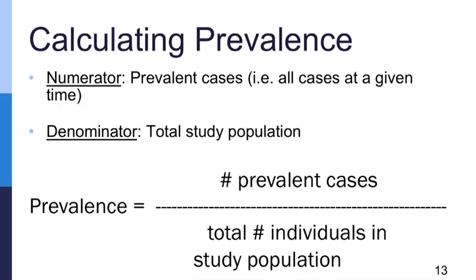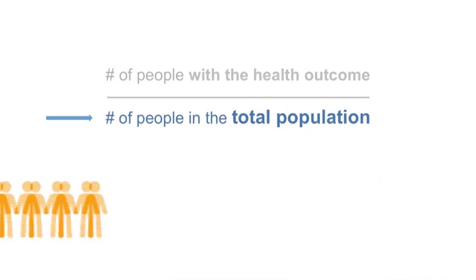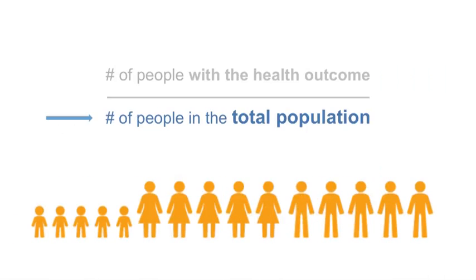Here is the formula for prevalence. The numerator is the prevalent cases — all existing cases at a given point in time — and the denominator is the total study population. For all measures of disease occurrence, it is important to think about who should be in the denominator of your calculation. You want the denominator to represent the people who could have the disease or health outcome in your study population.